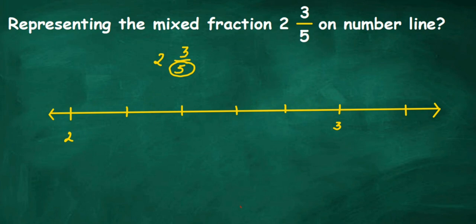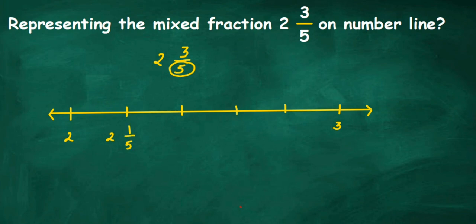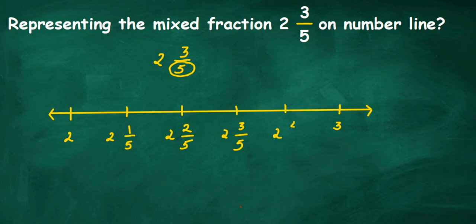Now we can start marking. The first point will be 2 1/5 — the first part out of 5 equal parts. The next will be 2 2/5, because this is the second part. Here 2 is the whole number and 2/5 is the fractional part. The next will be 2 3/5, then 2 4/5, and the last will be 2 5/5, which equals 3.